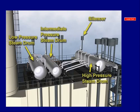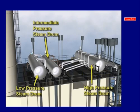One HRSG is provided for each of the two gas turbines, and two HRSGs provide steam for the single steam turbine. This is called a two-on-one combined cycle plant configuration. Both of the HRSGs operate at three pressure and temperature levels with natural circulation.